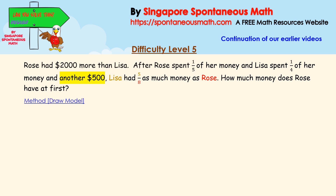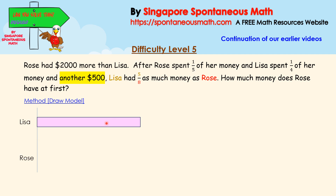We are going to use the model method to solve this problem. In drawing models, it's always a good habit to have a straight vertical line because that will make our model much neater. So Lisa had a certain amount of money and Rose had the same amount plus another $2,000 more.